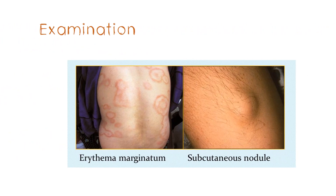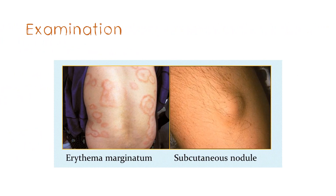We complete the history with the rest of the components and then look for features of rheumatic fever on examination. You can see the typical rash — erythema marginatum — and subcutaneous nodules. Erythema marginatum is a non-painful, non-pruritic rash with a pink center and a raised red margin.